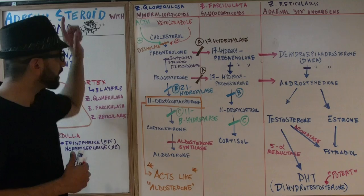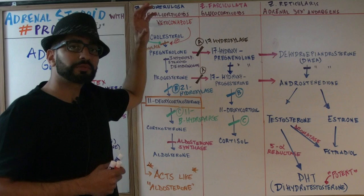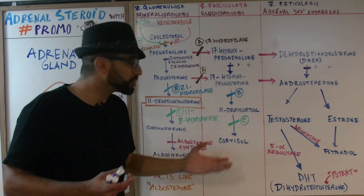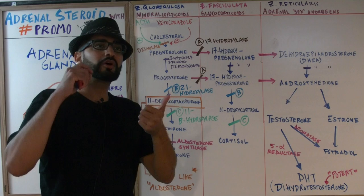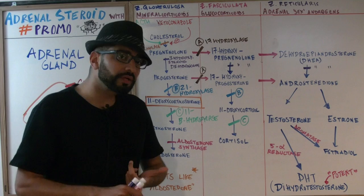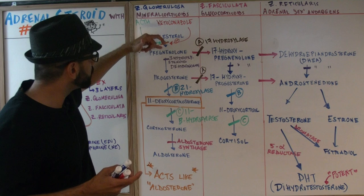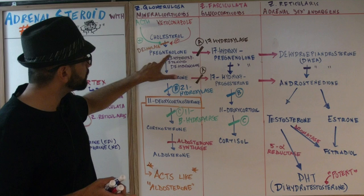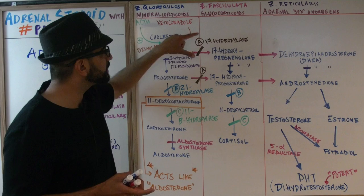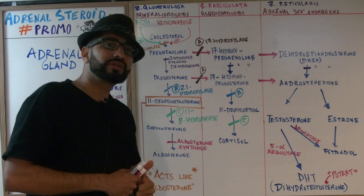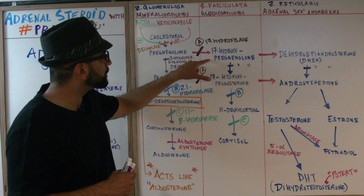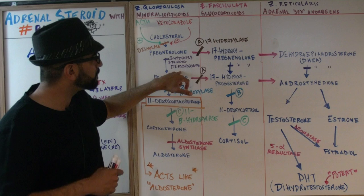The second column is the zona fasciculata, responsible for producing glucocorticoids — specifically cortisol. We talked about cortisol in previous lectures, including its effects and what happens when we have too much or too little, referred to as adrenal insufficiency. Referring back to the first column: cholesterol converts to pregnenolone via desmolase. Pregnenolone then converts into 17-hydroxypregnenolone through 17-hydroxylase — the third important enzyme for congenital adrenal hyperplasias. 17-hydroxypregnenolone converts into 17-hydroxyprogesterone through the same 3-hydroxysteroid dehydrogenase.